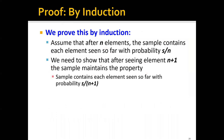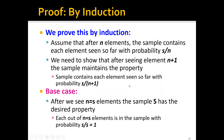We can prove this by induction. Assume that after n elements, the sample contains each element seen so far with probability S over n, and we need to show that after seeing element n plus 1, the sample maintains the property with probability S over n plus 1. As in all proofs by induction, we have a base case: after we see n equals S elements, each of the S elements is in the sample with probability S over S equals 1 — that is, each element is in the sample with 100% probability.